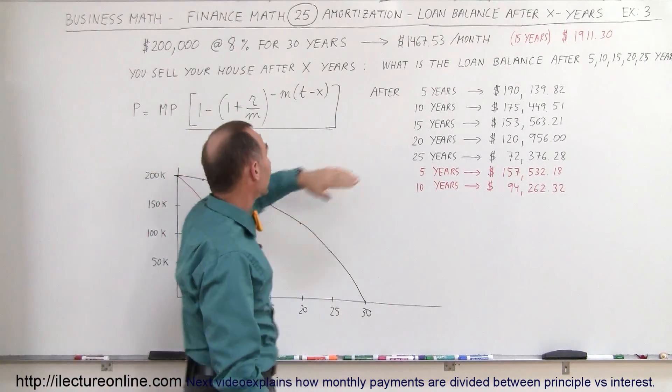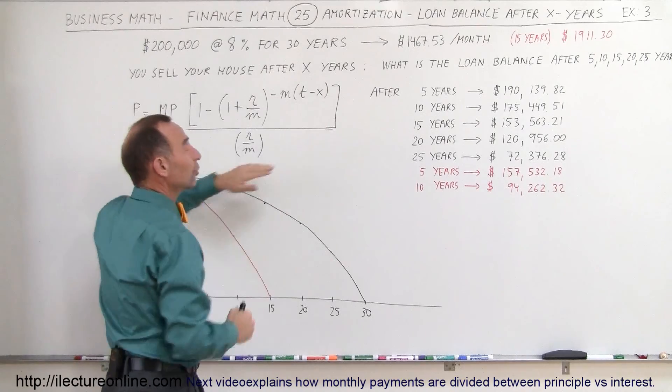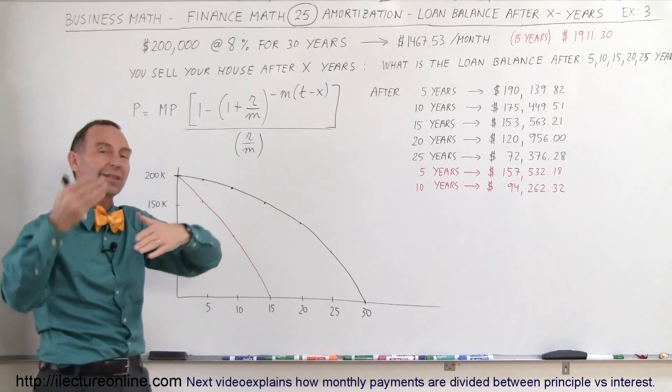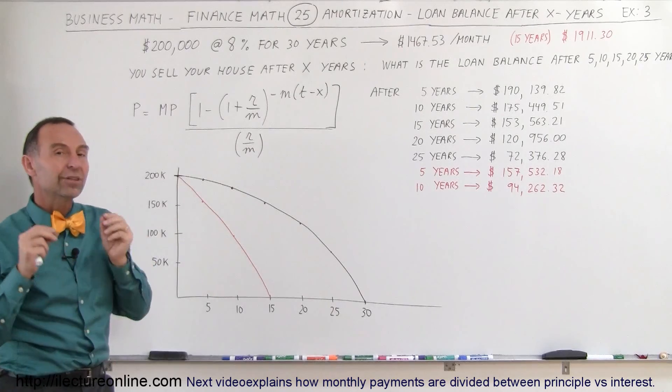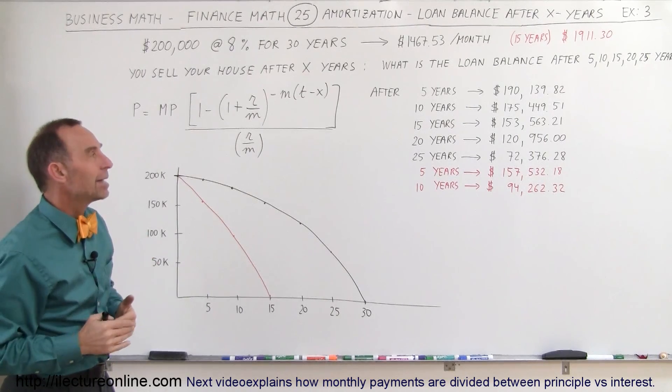After 5 years for example, we can calculate that using this equation right here. If you want to know how to use the formula, take a look at the previous couple of examples where we show you how to use this formula. It will tell you how much of the principal is left to be paid.